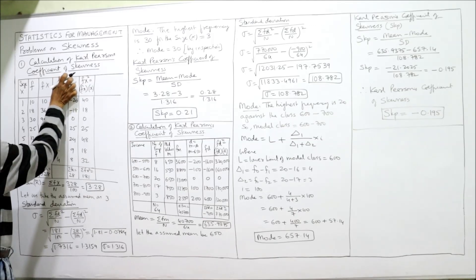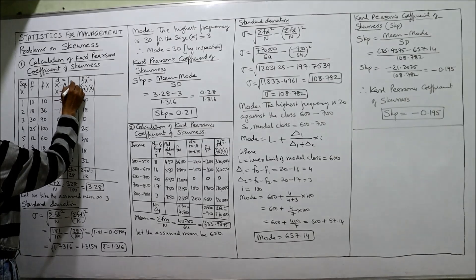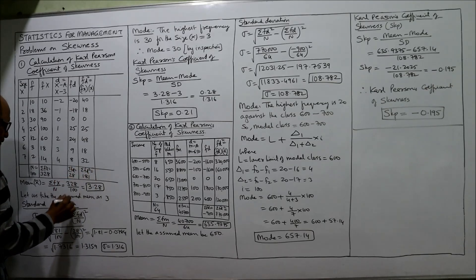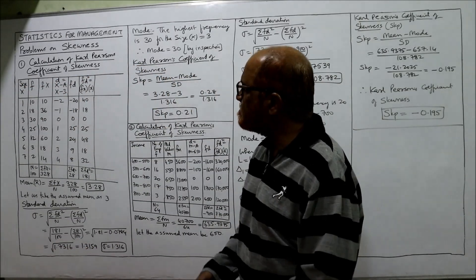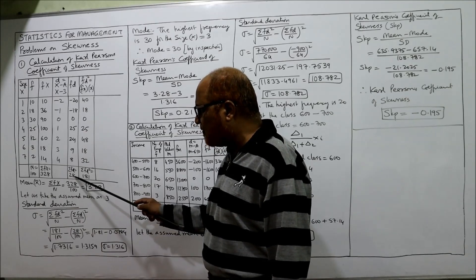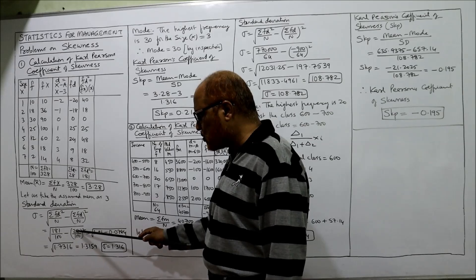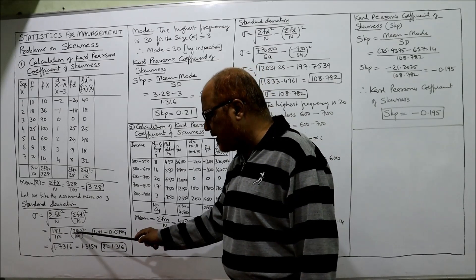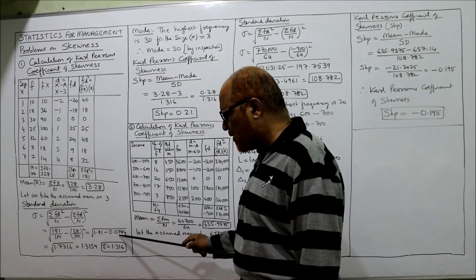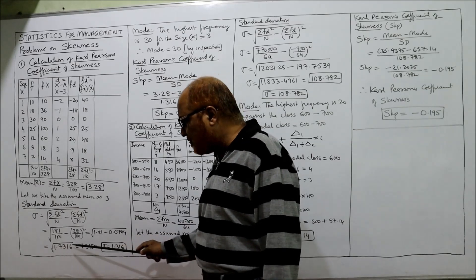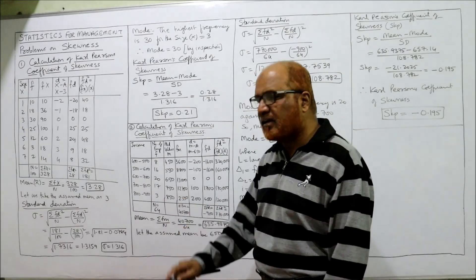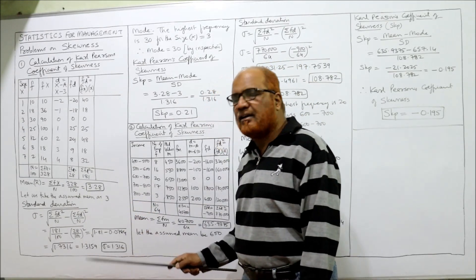Substituting: σ = √(181/100 − (28/100)²) = √(1.81 − 0.0784) = √1.7316 ≈ 1.316. So the standard deviation is 1.316. We have now calculated the mean (3.28) and the standard deviation (1.316). Next we need the mode.